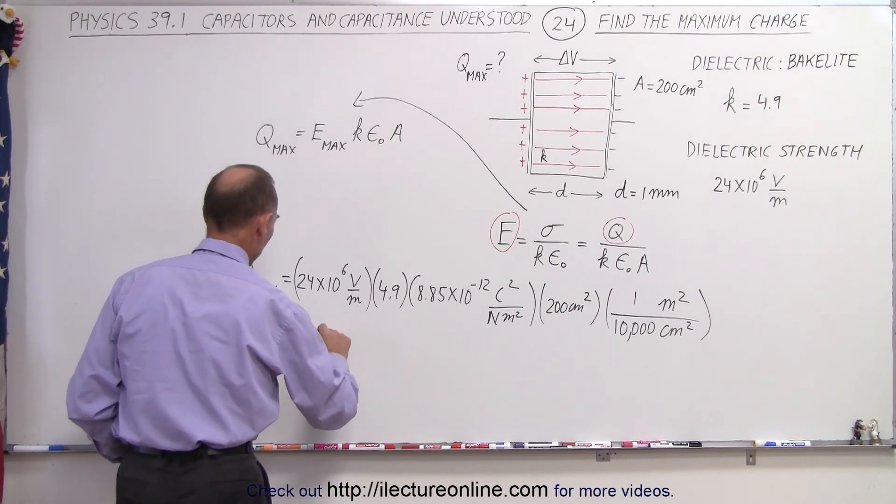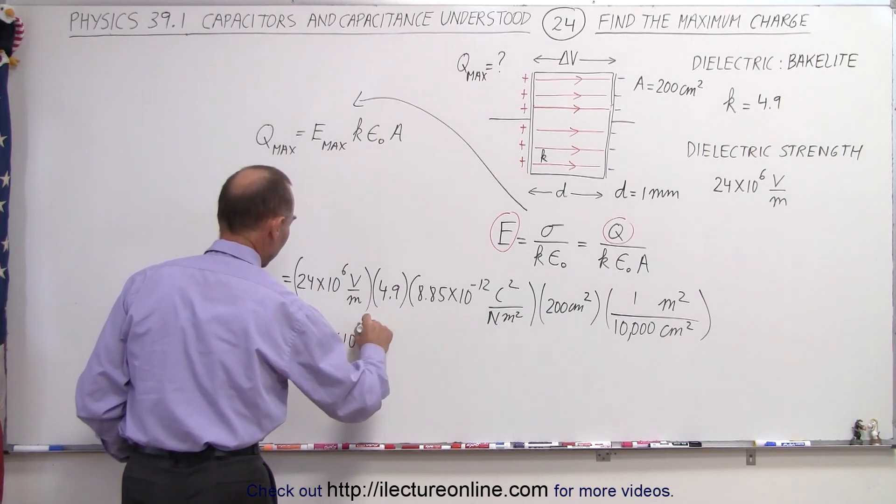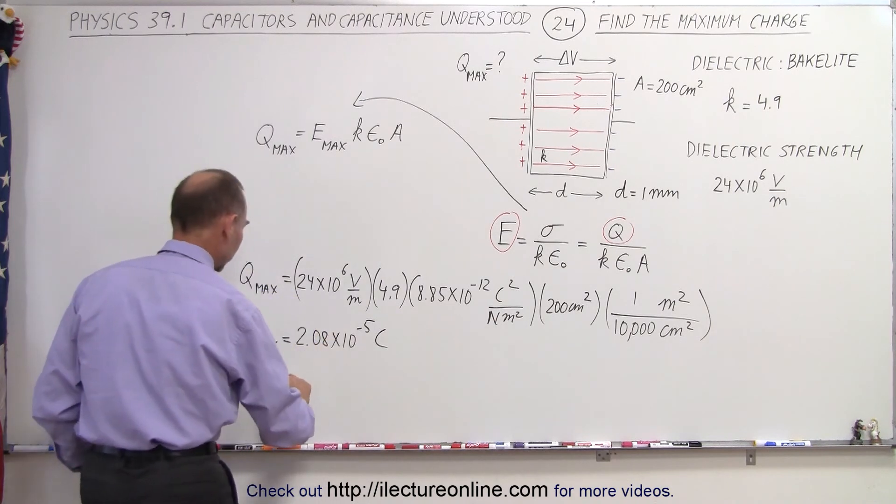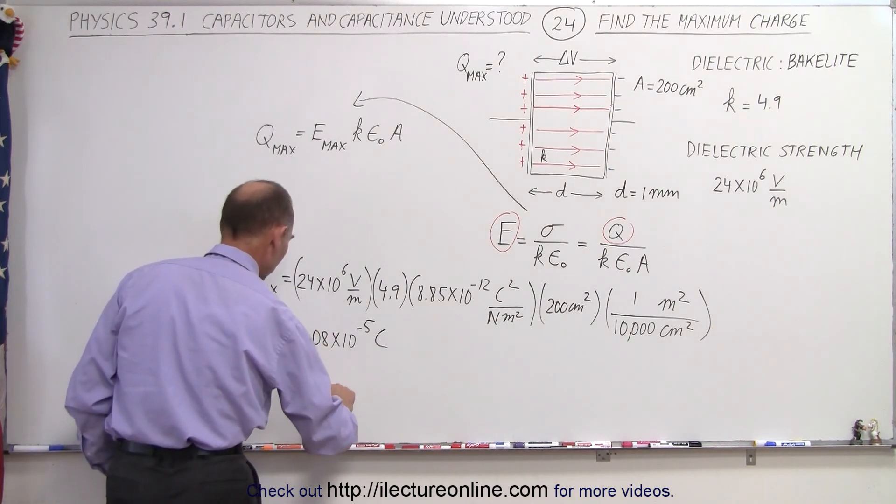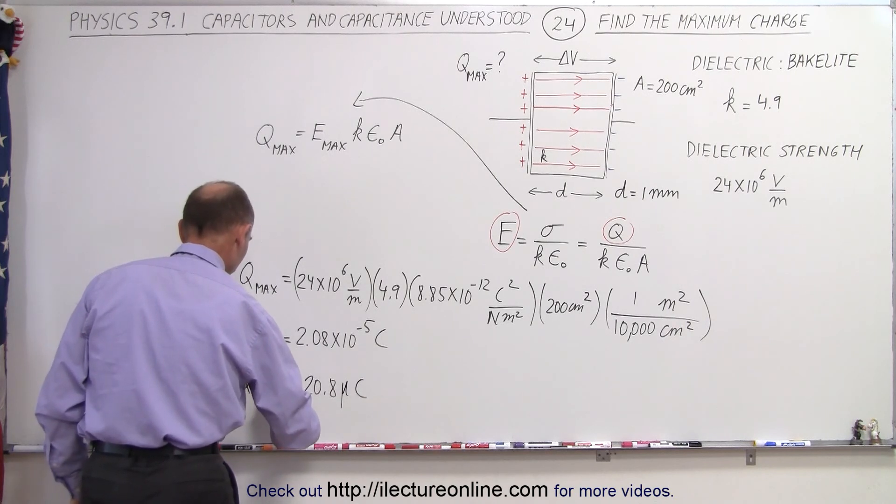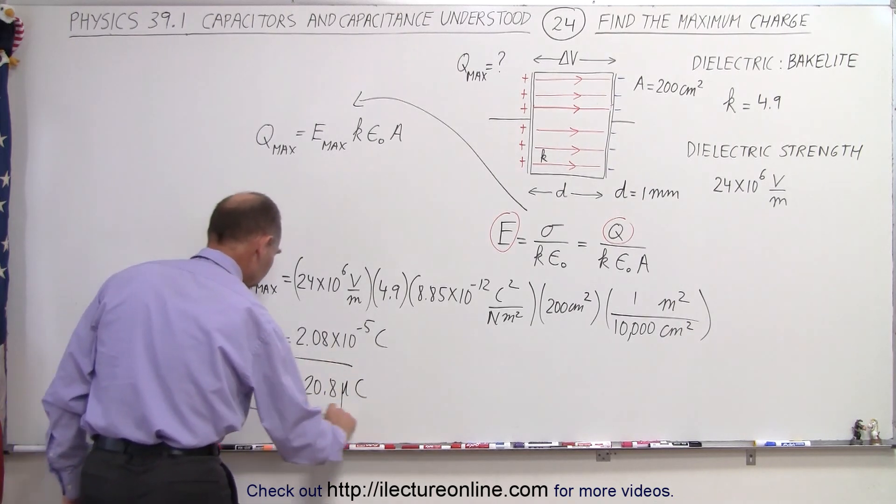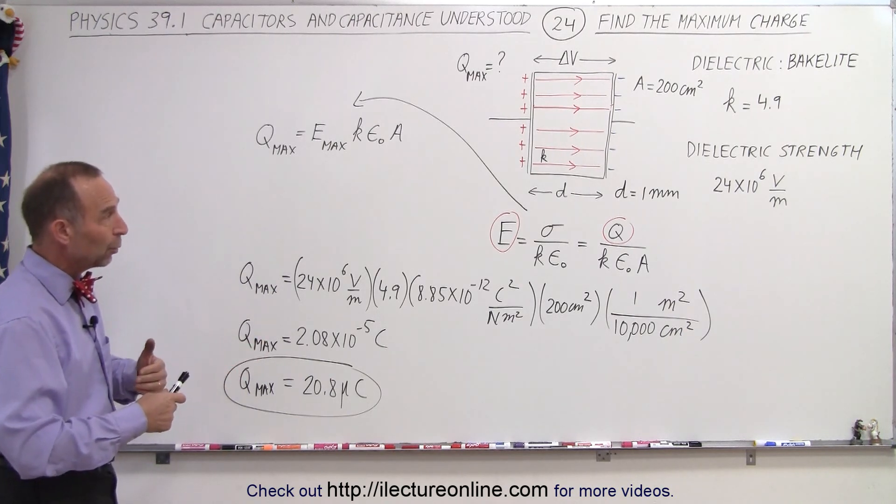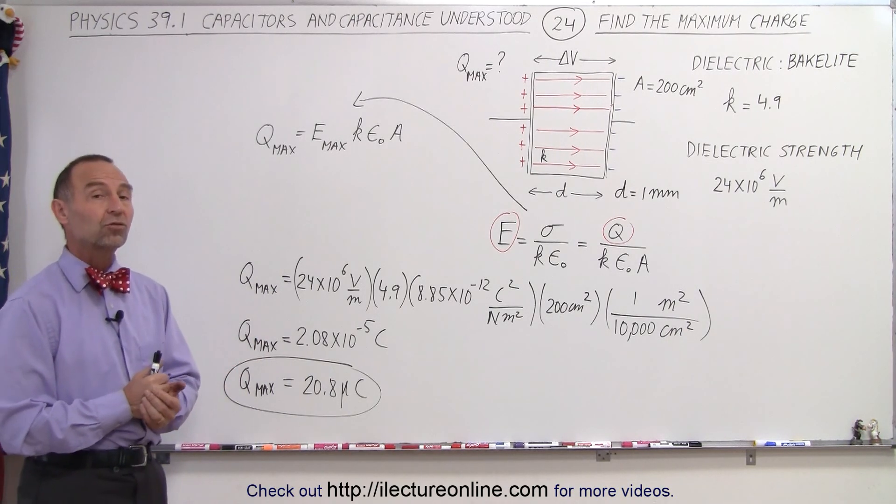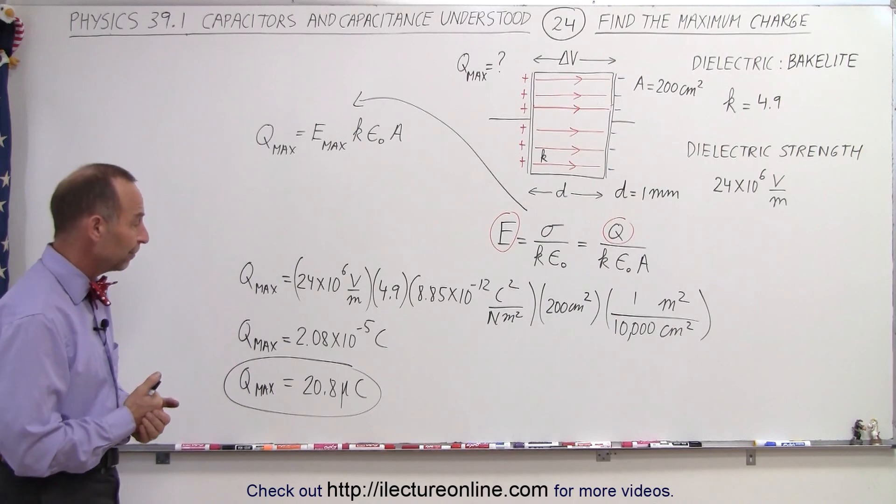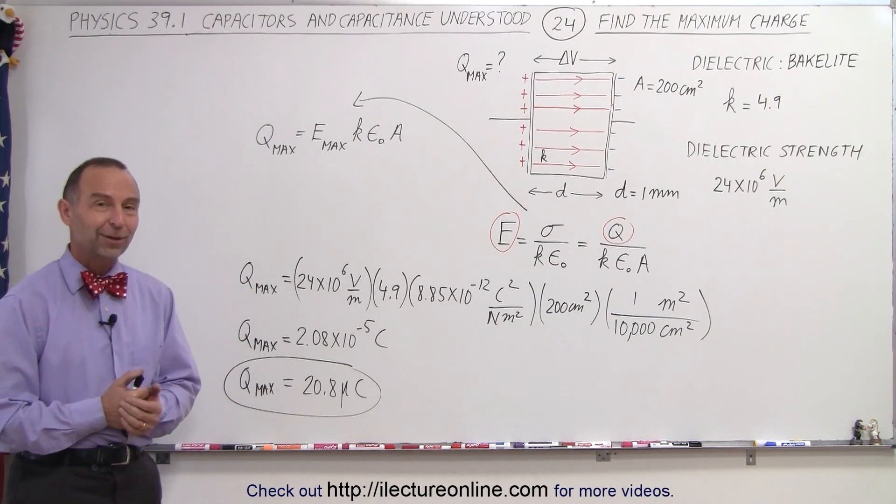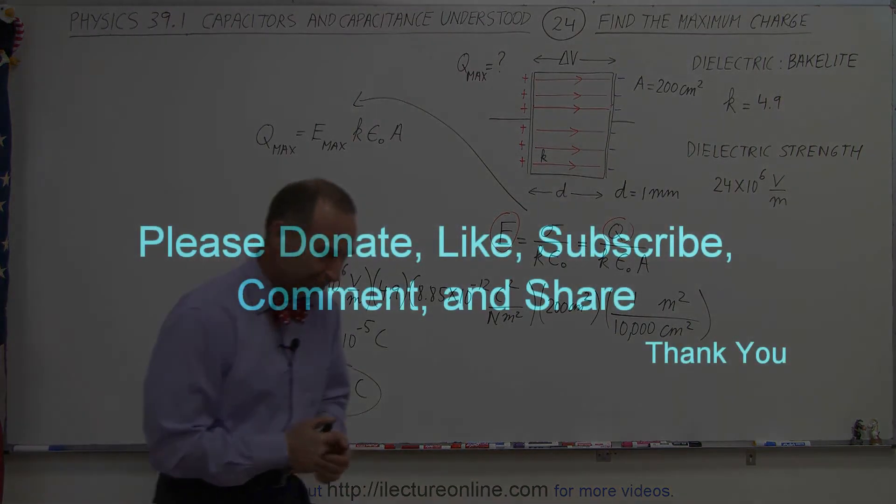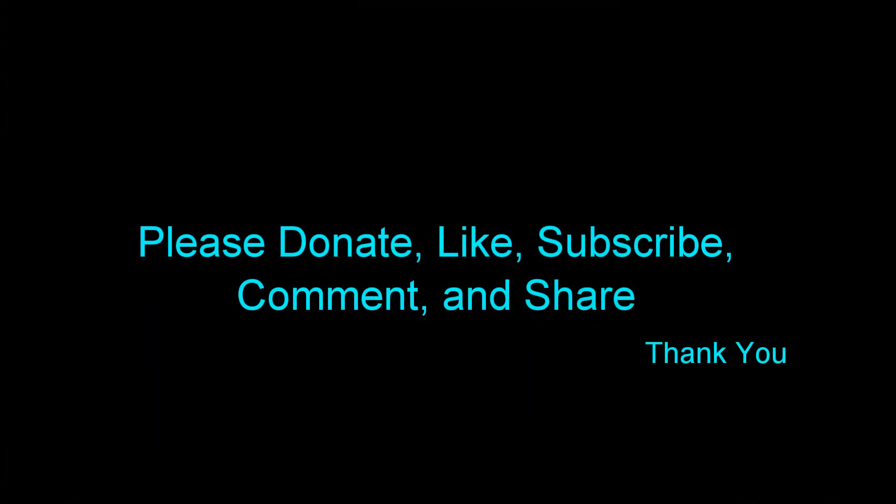is equal to 2.08 times 10 to the minus 5 coulombs so that could be written as 20.8 micro coulombs, Q max and so you put any more charge onto those plates than that the electric field will be too large and it will exceed that dielectric strength and you will destroy your capacitor and that's how it's done. Thank you.